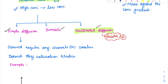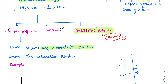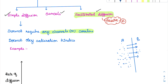Simple diffusion: first, it does not require any energy because it is passive. Second, it does not require any channels or carriers. Whenever a substance is present where concentration is more on one side and less on the other, there will be constant movement from side A to side B due to the concentration gradient. If concentration keeps increasing, the rate of diffusion also increases — it does not obey saturation kinetics.